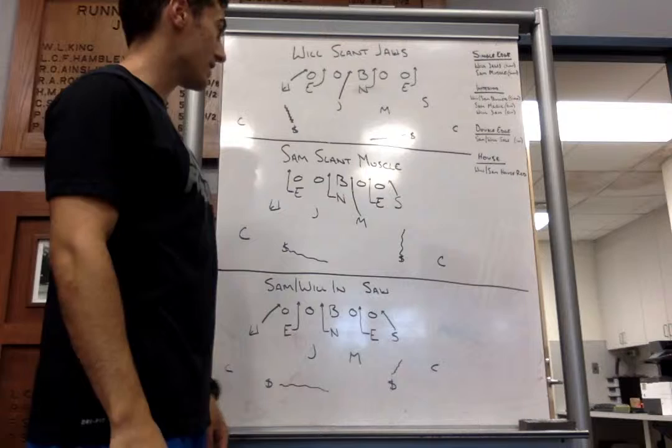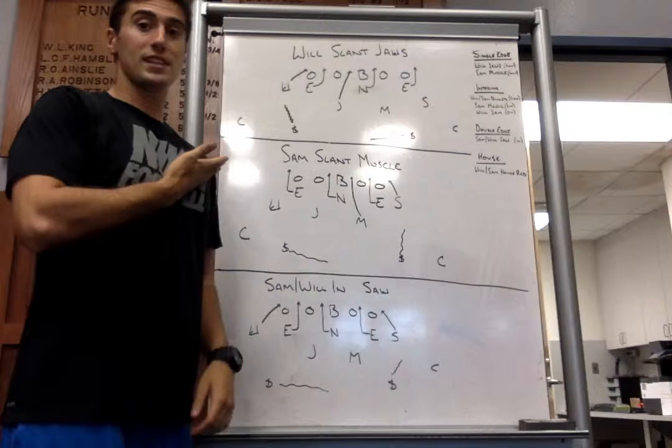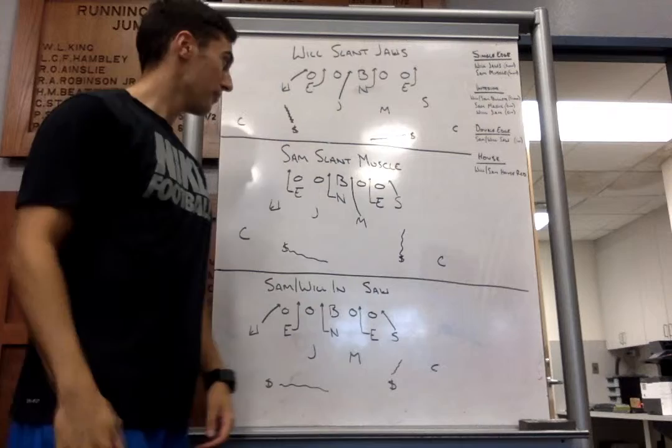Same thing that we can do with Sam. We can go Sam, Slant. This time, we'll go Muscle. So, we'll go Sam, Slant, Muscle. Again, we'll be in our Sam front. Sam is six, four, zero, four. Alright.